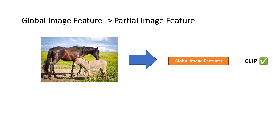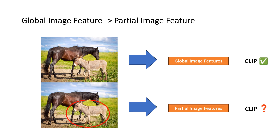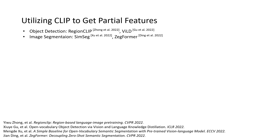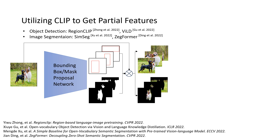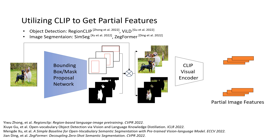For image segmentation tasks, one needs to obtain partial image features so that they can be used for recognition. For example, if we want to identify the donkey in the image, we need to get the partial feature of the donkey area first. There has been some work on utilizing CLIP to get such partial features in open vocabulary recognition tasks. A common way is to first get bounding box or mask proposals from an image, and then use the bounding boxes or masks to crop the masked images, which are sent to the CLIP visual encoder to get partial image features for further recognition.